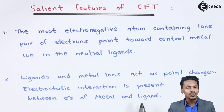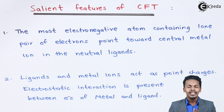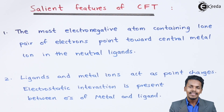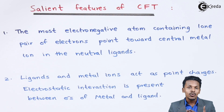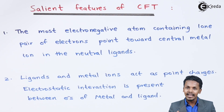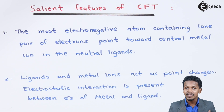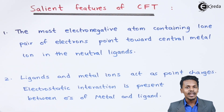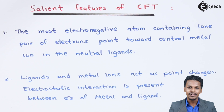When metals form a bond with ligands, the metal undergoes hybridization and already contains electrons. Therefore there is also an interaction between the lone pair of electrons from the ligands and the electrons already present in the metal. This was related to the second point.